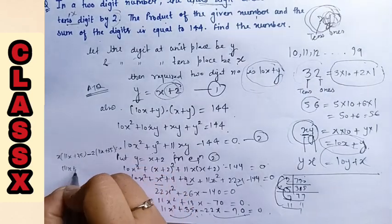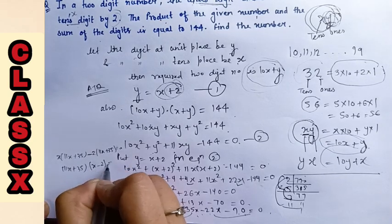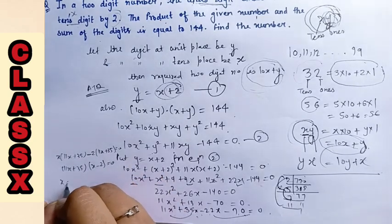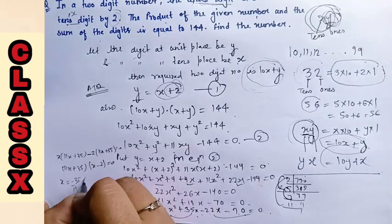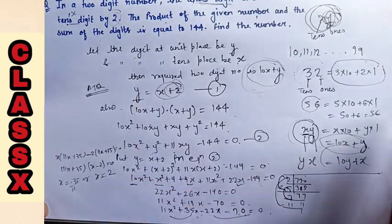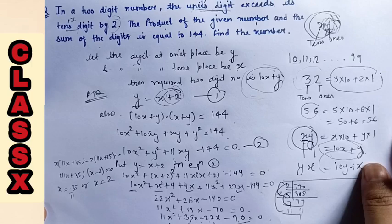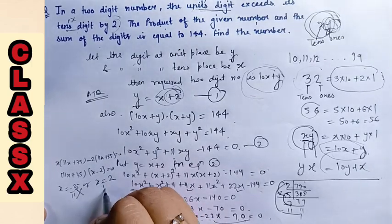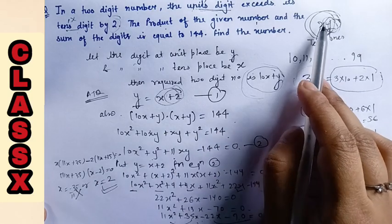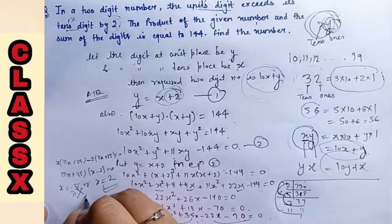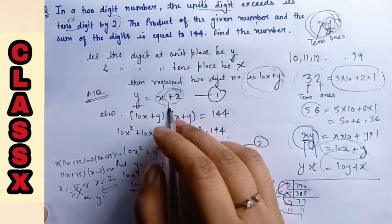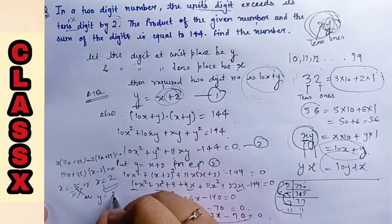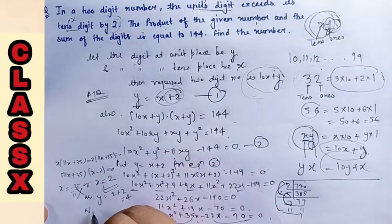I am getting x equal minus 35 by 11 or x equal positive 2. But as we know that it is a digit, not a fraction, so it will be cancelled. So the 10th place digit is 2. Also, y equal x plus 2, so 2 plus 2 is 4.